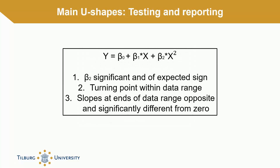To test for the existence of U-shapes, we propose the use of a three-step method. First, one has to observe the sign and significance of the coefficient of the x-square term. Second, the researcher has to formally test whether the turning point of the relationship is within the data range. And third, one needs to show that the slopes on both ends of the data range are of opposite sign as well as significantly different from zero.